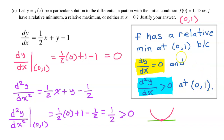Notice that for the second derivative test, you must include both conditions: you must state not only that the second derivative is positive or negative, but also that the first derivative is equal to zero.